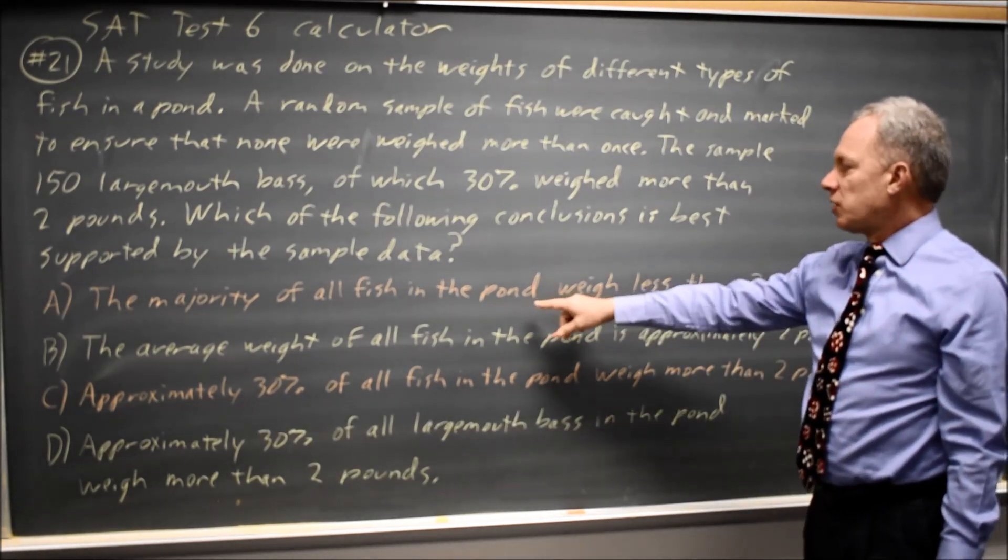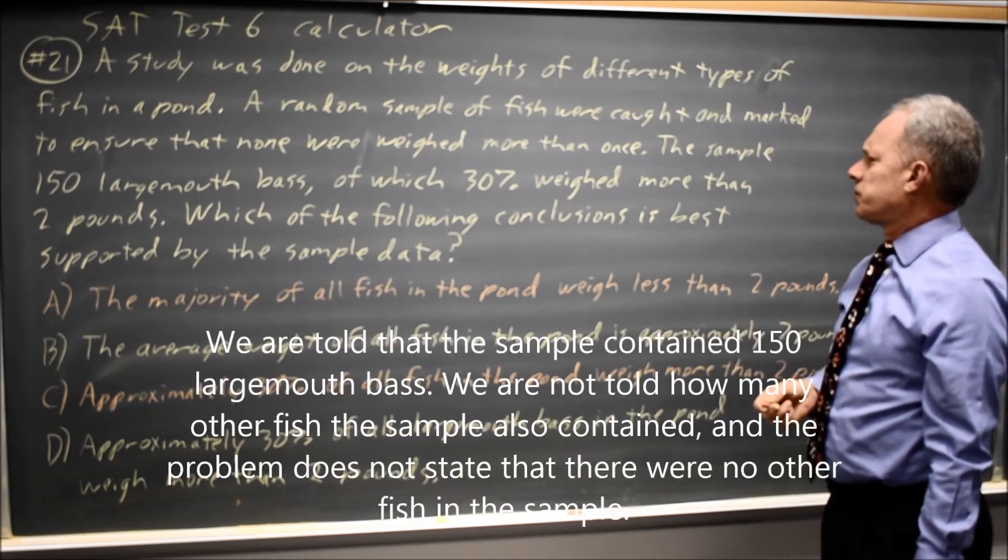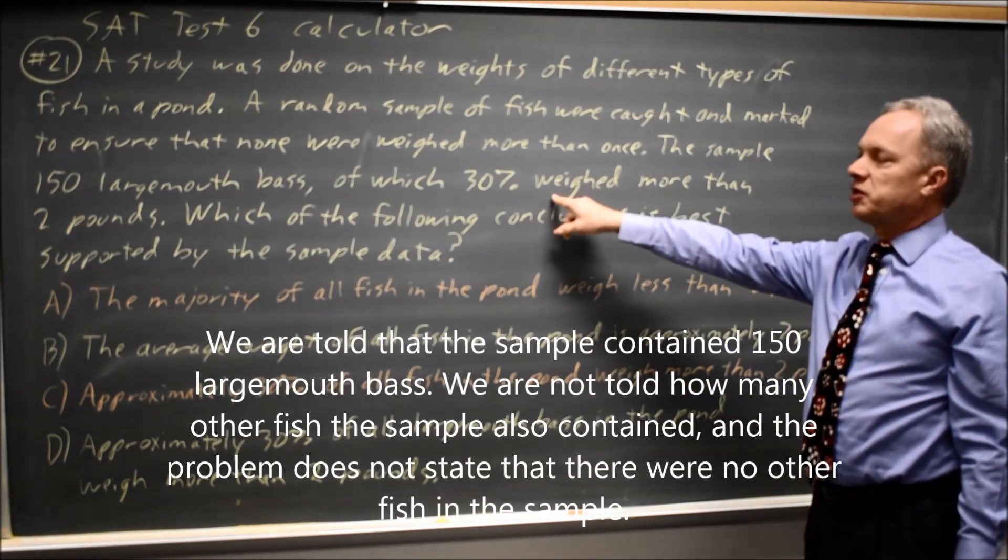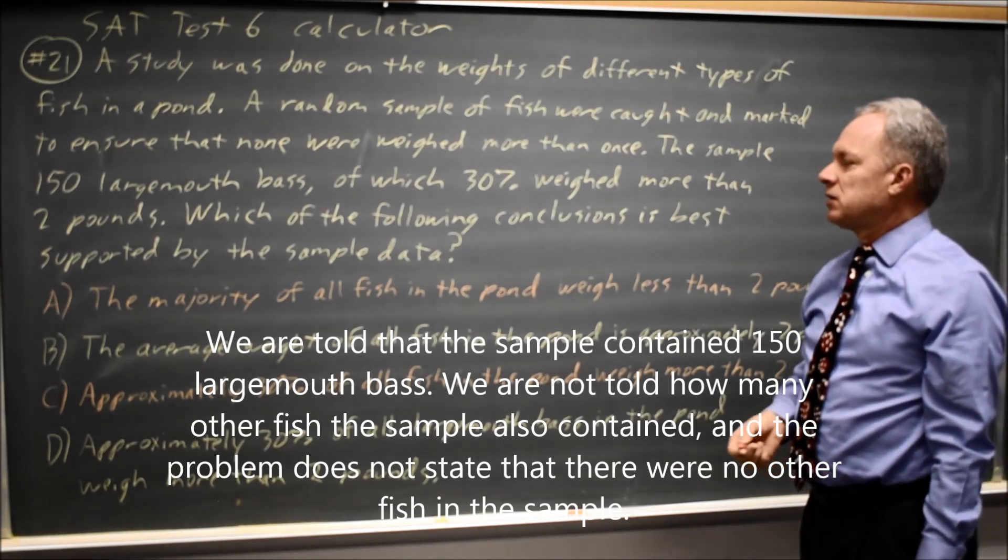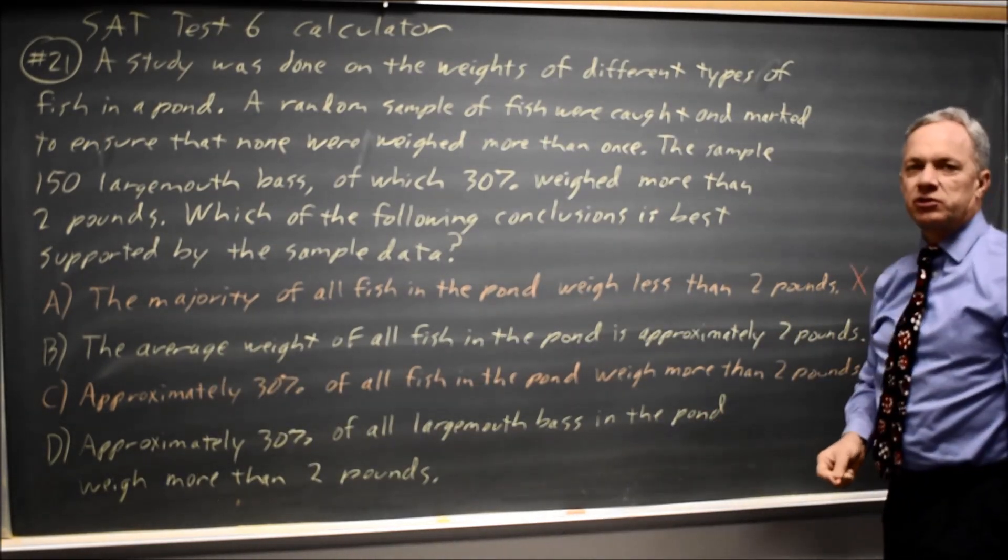Choice A. The majority of all fish in the pond weigh less than 2 pounds. Since we only have information on the largemouth bass in the pond, we can't draw a conclusion about all fish in the pond, so choice A is wrong.